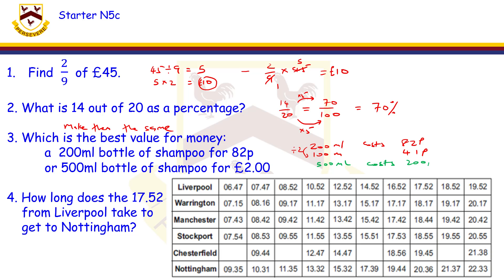So 100 ml, to get to 100 I've got to divide by 5, will cost 200 divided by 5, 40p. So that means the larger bottle is the best value for money.